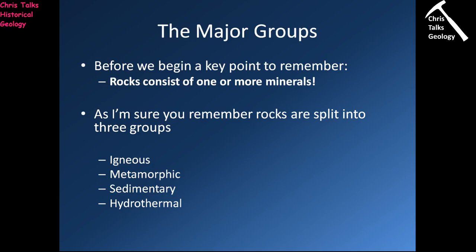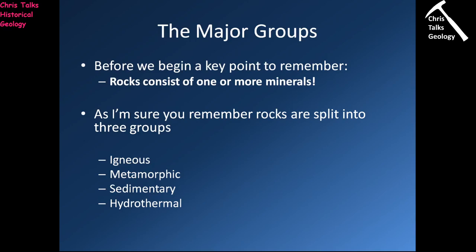Here's our rock cycle. It's a very simplified diagram, so let's run through the basics. Exposed rock gets weathered and eroded, producing sediment which gets transported and eventually deposited, forming a layer. That layer gets buried deeper and deeper, temperature and pressure increase, the layer gets compacted and cemented, and eventually it will lithify to form a sedimentary rock.